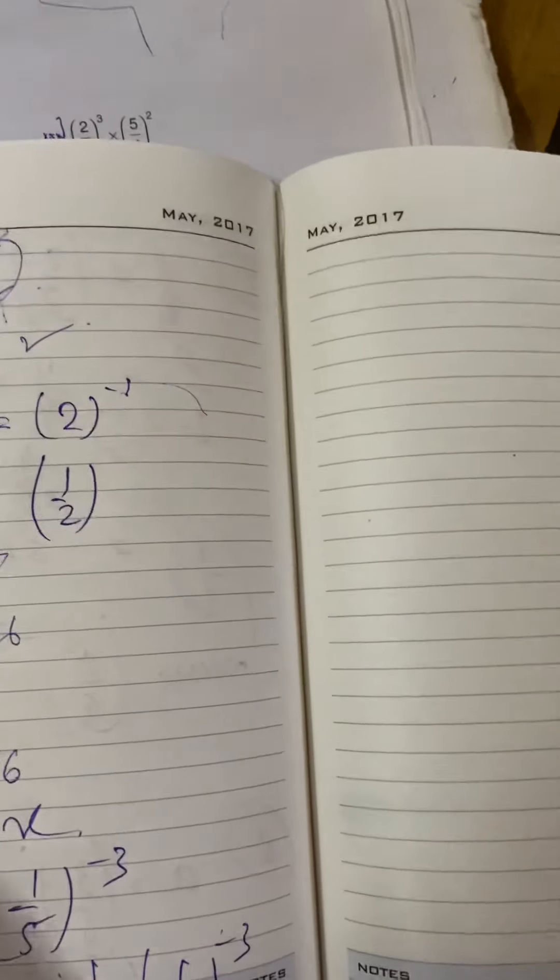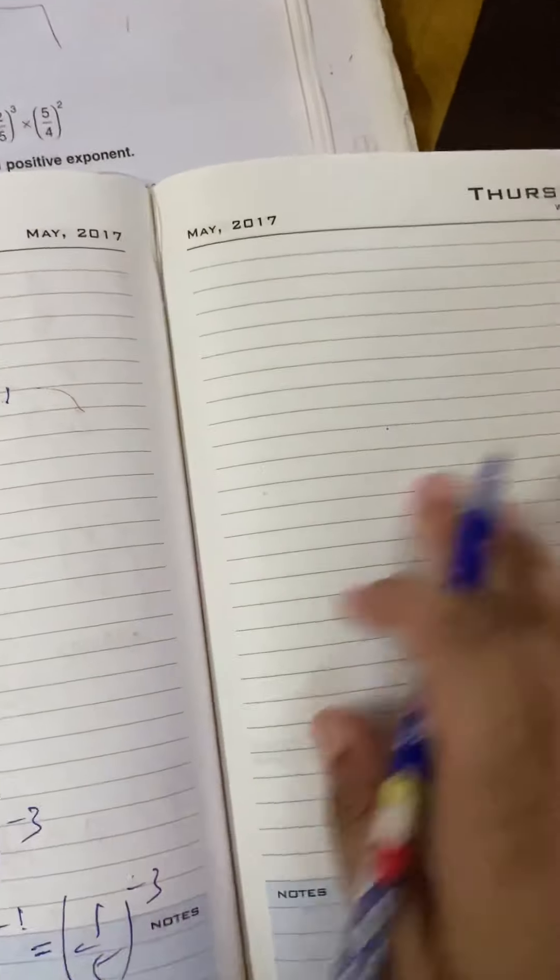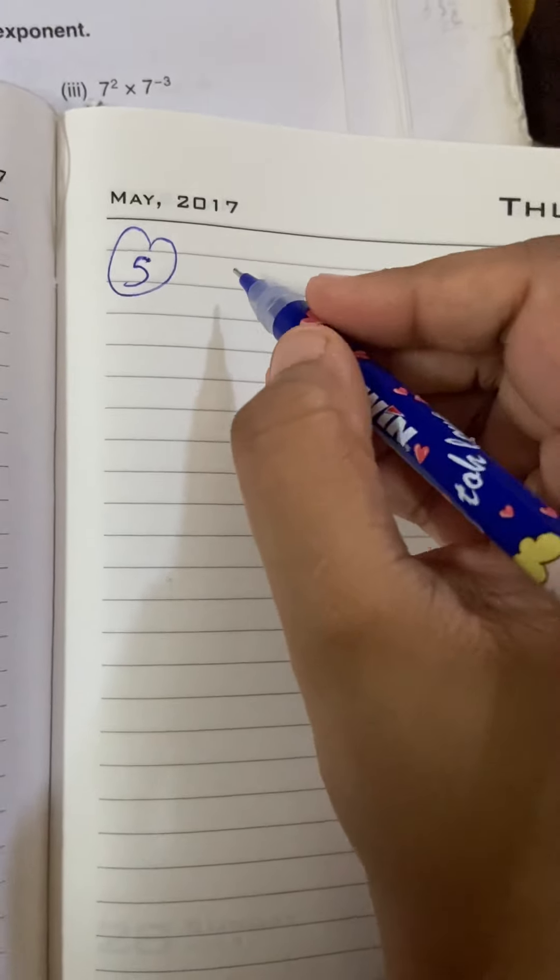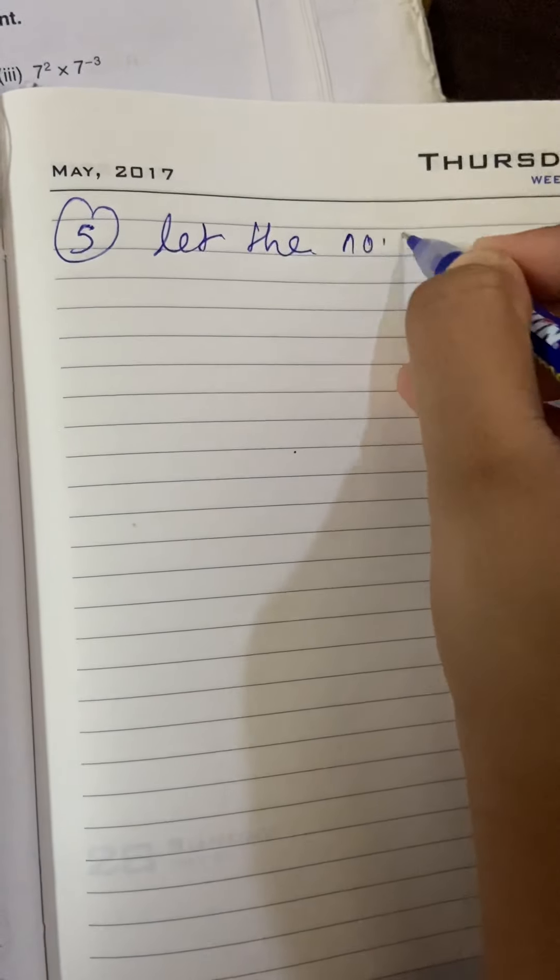Now, you'll do question number 4 on your own. I'll explain question number 5. By what number should this be divided? Let the number be x.